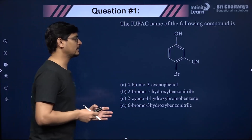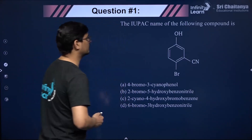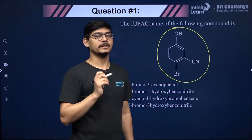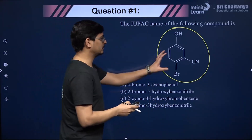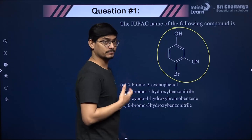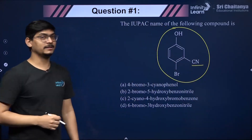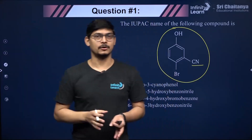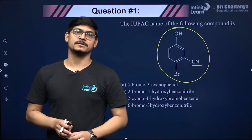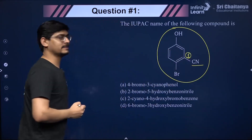IUPAC nomenclature is the most basic thing in organic chemistry. For this compound, whenever you number your parent chain, the functional group must get the lowest possible number. This molecule has multiple functional groups: bromine (haloalkane), phenol (OH), and a cyanide (CN) group. There is a priority sequence — cyanide comes first in the priority sequence, so it gets number one.